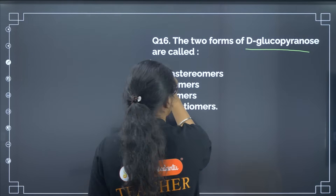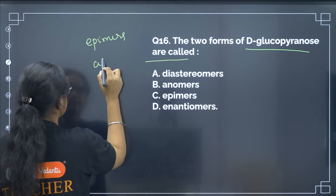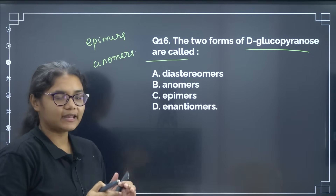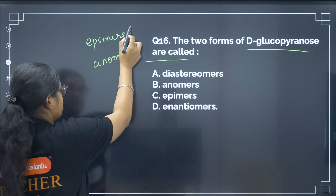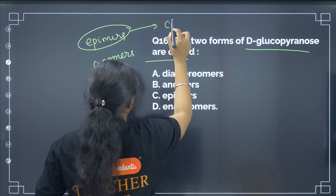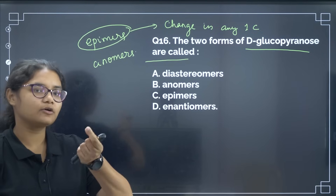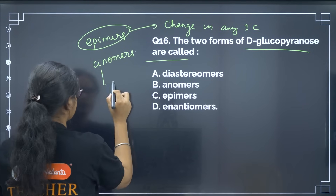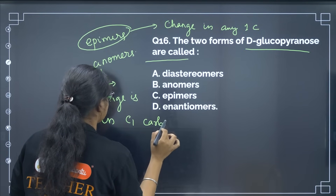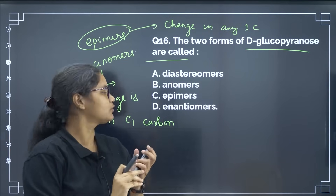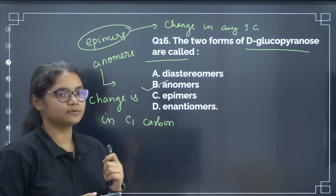The two forms of D-glucopyranose are called what? There are two terms: epimers and anomers. If there is any change in configuration at any one carbon, they are called epimers. If that change is specifically at C1 carbon, they are called anomers. In glucose this configuration difference is at C1 position, so they are anomers. The correct answer is option number B.